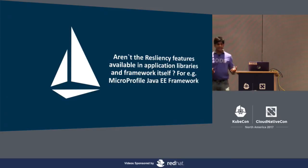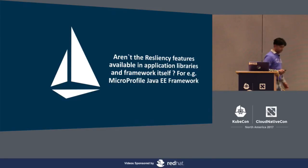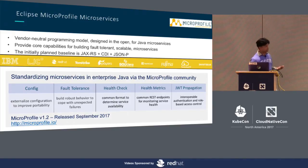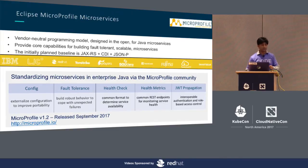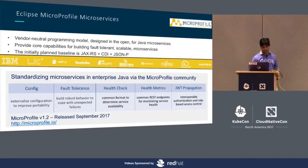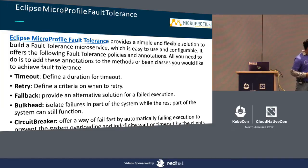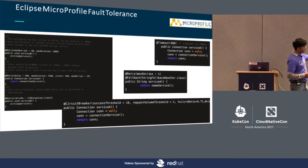Some of you may ask: aren't resiliency features already available in application libraries and frameworks themselves? For example, if you're using MicroProfile — a Java EE framework initially based on JAX-RS, CDI, and JSON-P, backed by IBM, Fujitsu, Red Hat, and others — some of these capabilities should come out of the box. There is a strong focus within MicroProfile around fault tolerance. What you can do is add annotations to your Java classes or JavaBeans to add things like timeout, retry, fallback, and bulkhead.